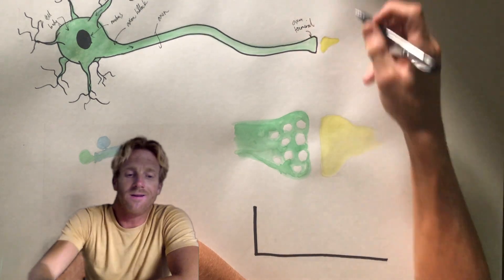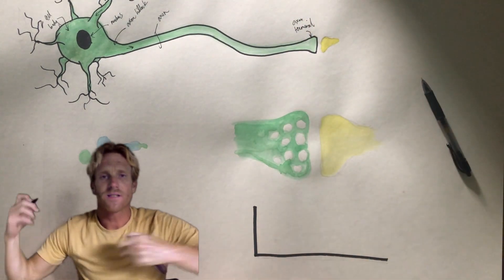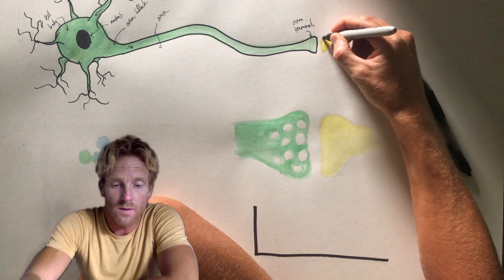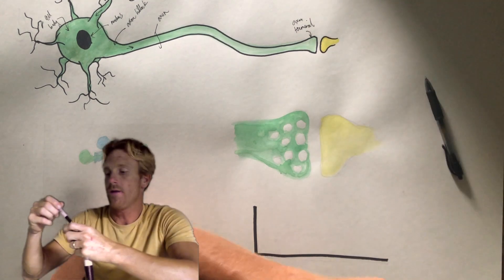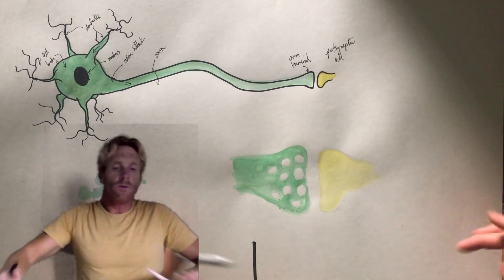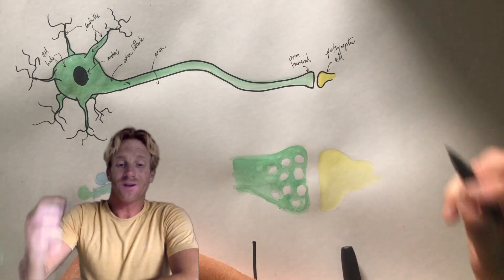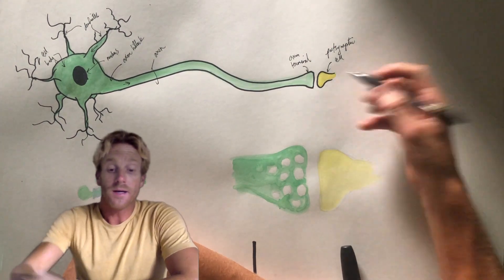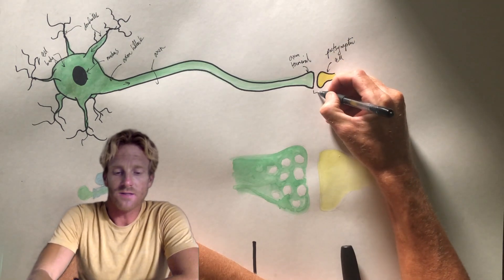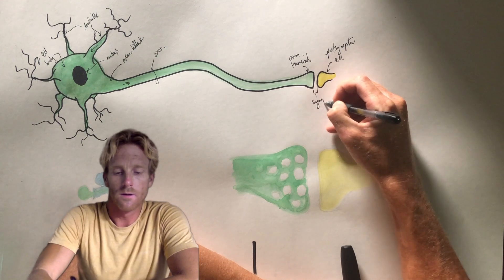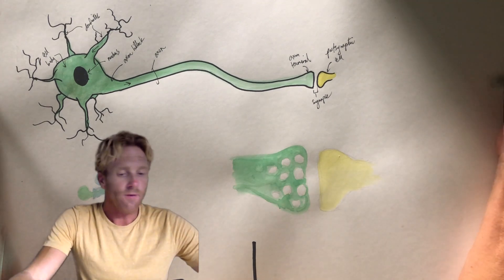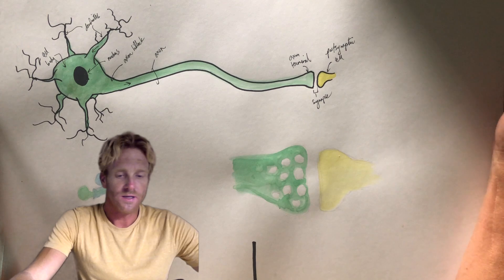The axon terminal is right here — that's where the axon ends. On the other side of the axon terminal is another cell that's going to receive the signal, drawn here in yellow. That's called the post-synaptic cell. The little space that separates this neuron from the cell receiving the information is called the synapse.